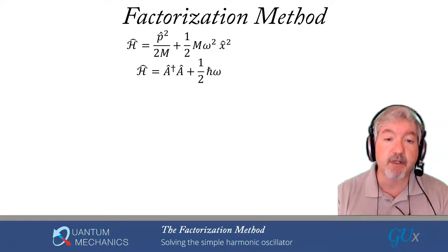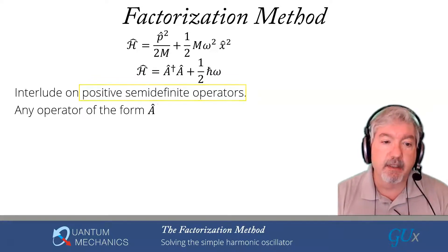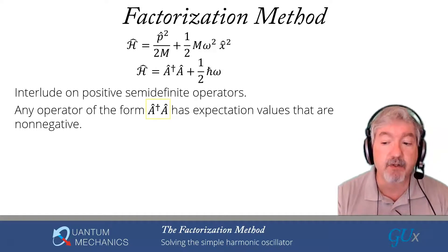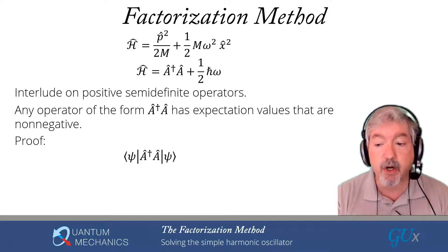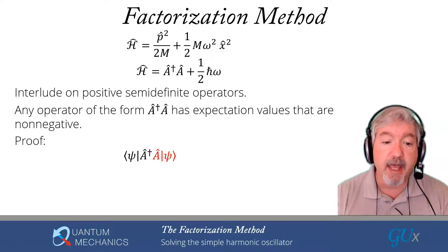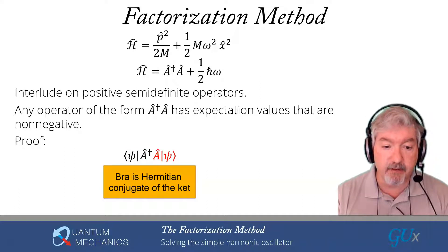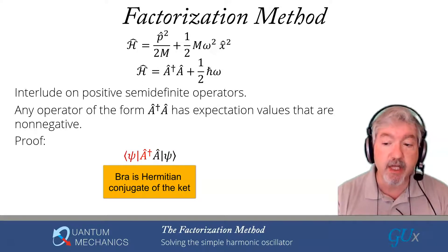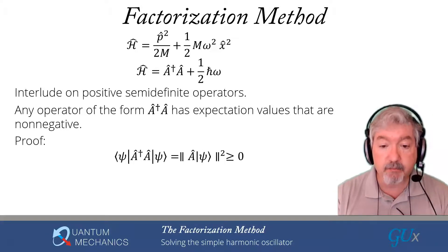That Hamiltonian has a positive semi-definite operator in it, and I want to carefully explain what positive semi-definite means. It means the expectation value of that term — the a†a — is always non-negative. Non-negative means zero plus positive numbers. We start out by looking at an expectation value. If you look carefully, you see that I have a vector — that's the a acting on ψ — and I have the bra of that vector, the Hermitian conjugate of that vector: ψa†. I'm taking the inner product of a vector with the Hermitian conjugate of the vector. What is that? That's the norm squared. And one property of the norm squared is it's bigger than or equal to zero. So any time I have an operator in the form of a†a, it's a positive semi-definite operator.